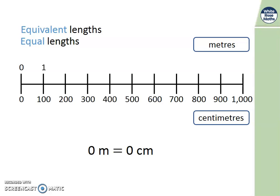At 100 centimetres, that's 1 metre. What comes next? 200 centimetres will be 2 metres. Well done if you spotted that. 3 metres is 300 centimetres. 4 metres is 400 centimetres. Can you complete the line?